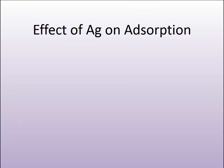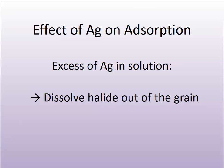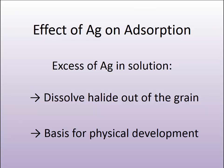We also understand that in the reverse, the addition of silver has an impact on the absorption of various components onto the grain. If we add much more excess silver into the solution, we find that we can dissolve the halide out of the grain and actually dissolve the grain in a controlled way into solution. This is the basis for physical development. It's these chemical adsorption properties at the surface which are very key, and there are differences found within each of the silver halide compounds.